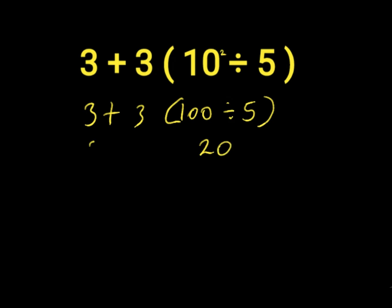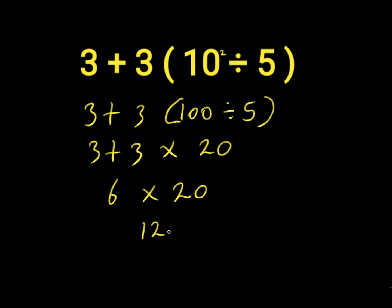100 divided by 5 will give us 20. We have 3 plus 3 times 20. 3 plus 3 gives us 6, then 6 times 20 gives us 120. But 120 is the wrong answer to this expression.